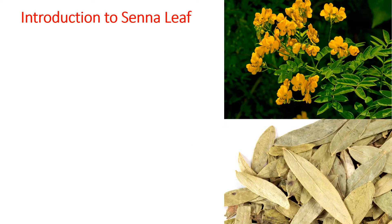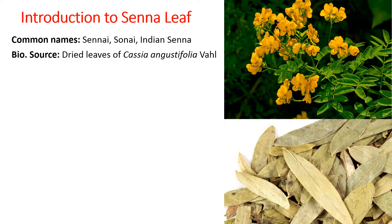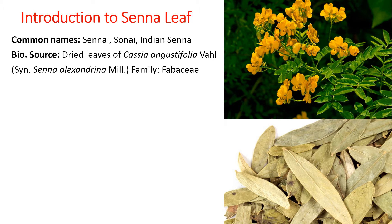Senna leaf is more popularly known as Indian Senna, Sonai ki Patti, or Sennai. It consists of dried leaves of Cassia angustifolia Wal., which has a synonym called Senna alexandrina Miller, belonging to family Fabaceae. The Fabaceae family has legume-like fruits and the legumes are smaller.